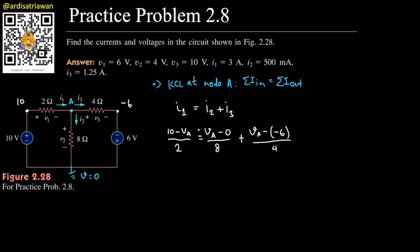We have an equation which only contains Va, so we should be able to isolate Va. Let's simplify this a bit: (10 - Va)/2, for this one Va/8, and for this one (Va + 6)/4.